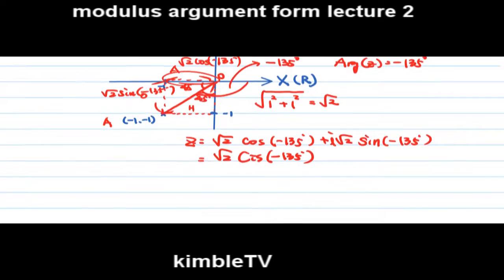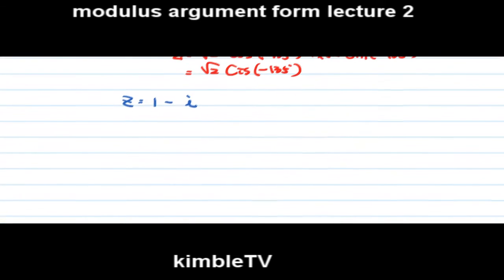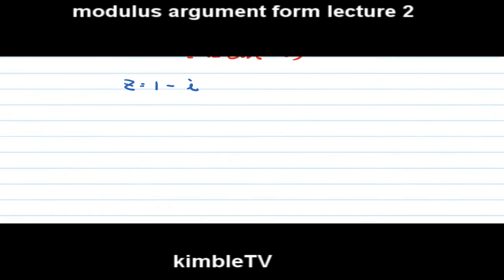The other one in the 4th quadrant: z equals 1 minus i in Cartesian form which stays in the 4th quadrant. Draw the x-axis and y-axis where x is the real part and y is the imaginary part. Real part is 1, imaginary part is minus 1. This angle is 45 degrees and the argument z is minus 45 degrees.